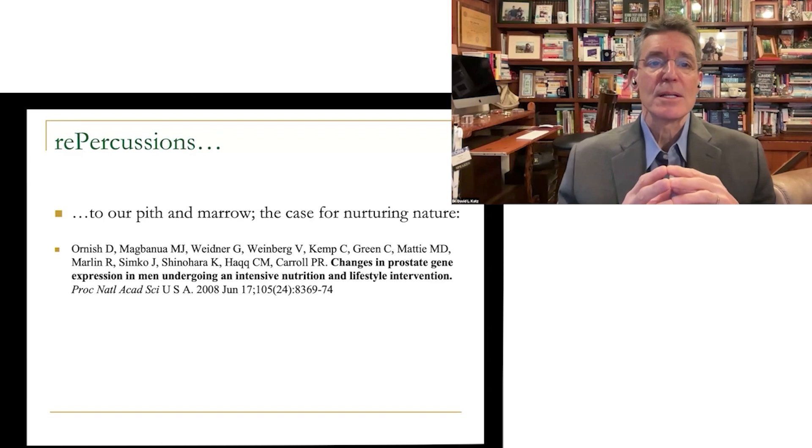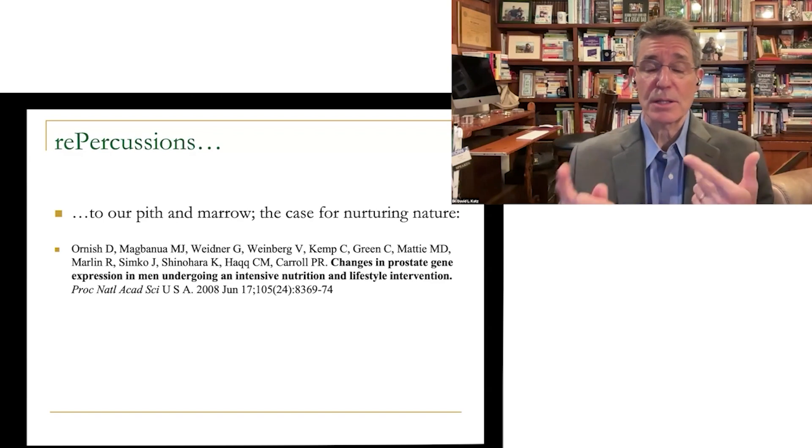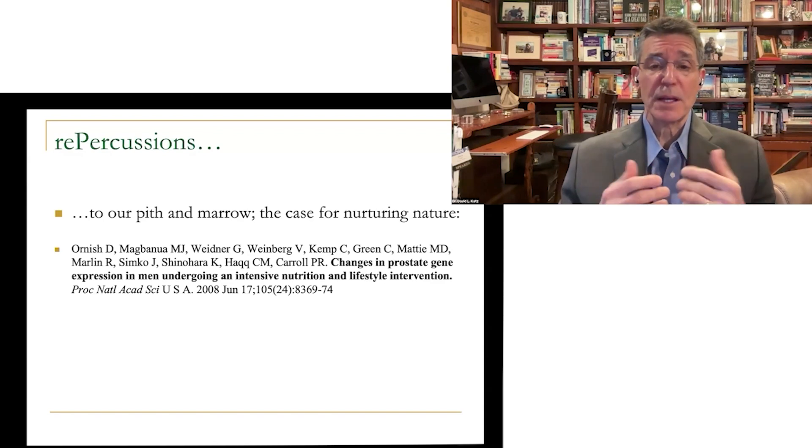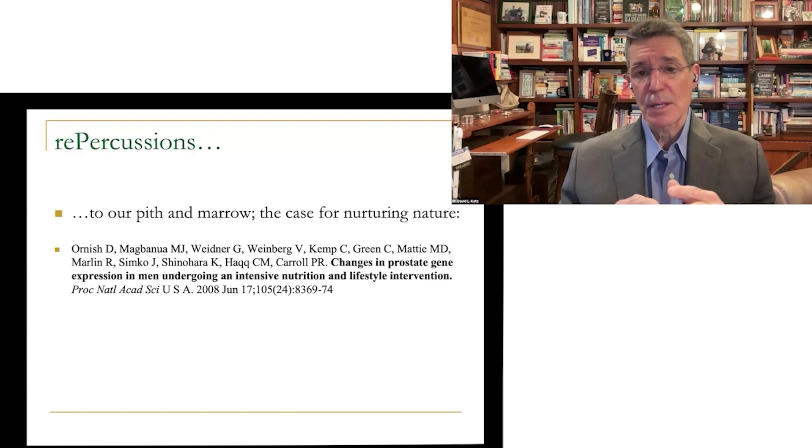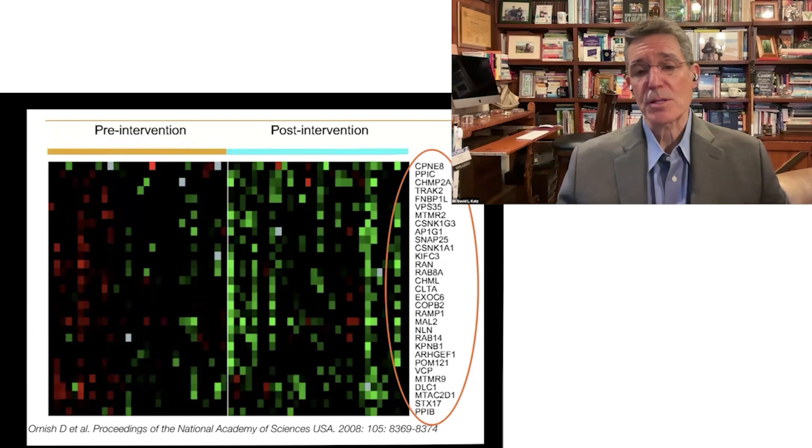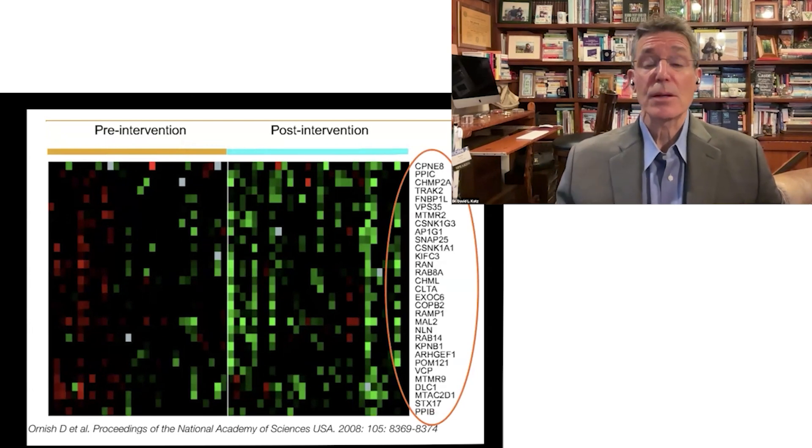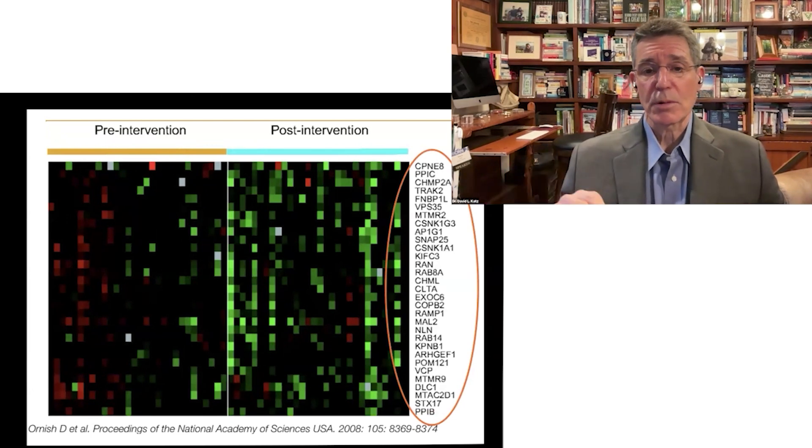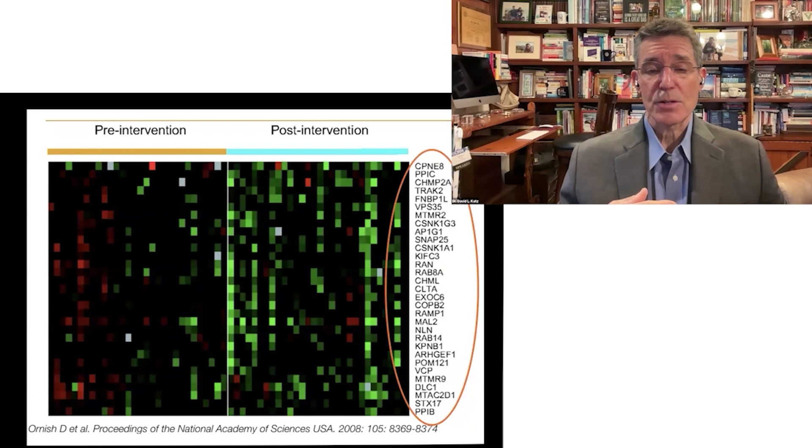So they fired on all six cylinders and over a span of months studied not so much the men and not so much the cancer in the men, but preferentially the genes in the men with the cancer. And what they found is that the lifestyle intervention took 500 cancer promoter genes and turned them off and 50 cancer suppressor genes shown here and turned them on. Left is before, right is after, red is off, green is on.